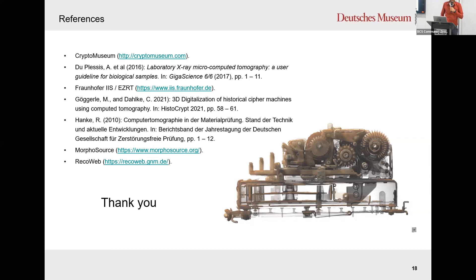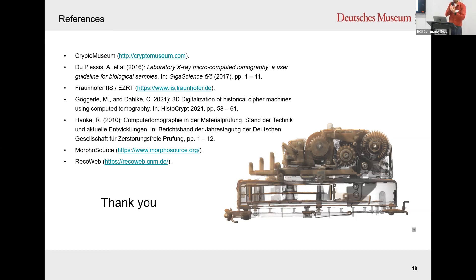To answer the question about the difference from medical CT scanners: industrial CT scanners use a much higher radiation source, which makes sense because we're scanning denser materials like metal, and for our airplane we need very high radiation. Also, in medical CT scanners the X-ray source and detector move around the patient, whereas in industrial CT scanners the object rotates — nobody wants to spin the patient around. For small objects in natural history, medical systems might sometimes be used, but there are differences.